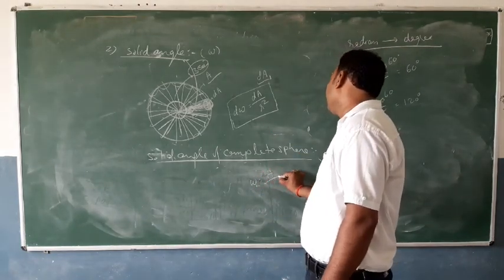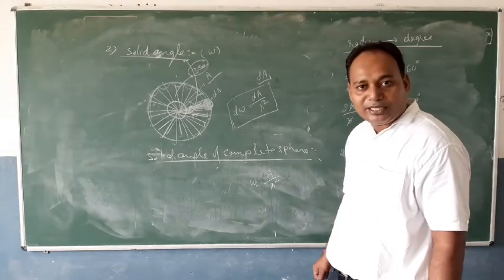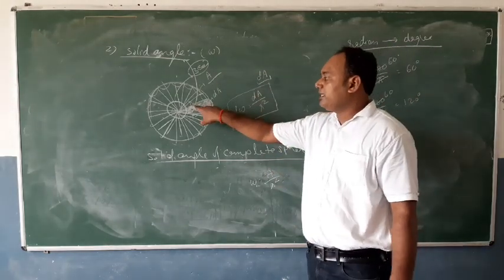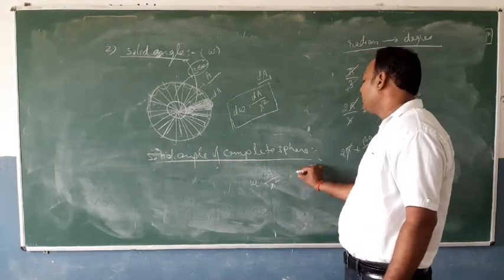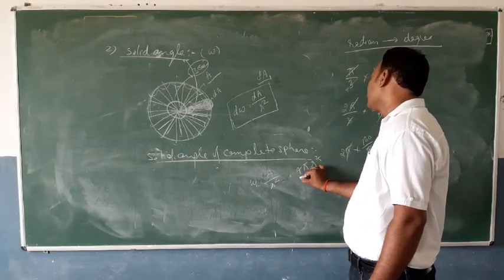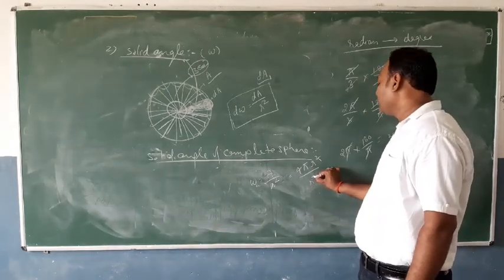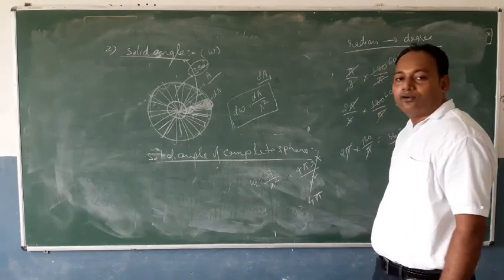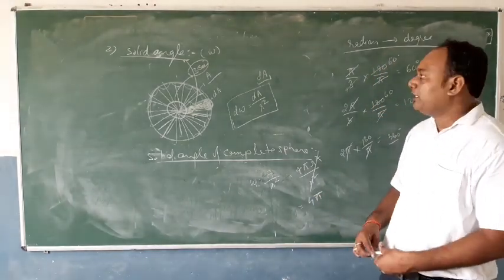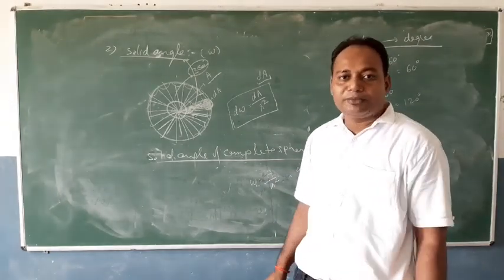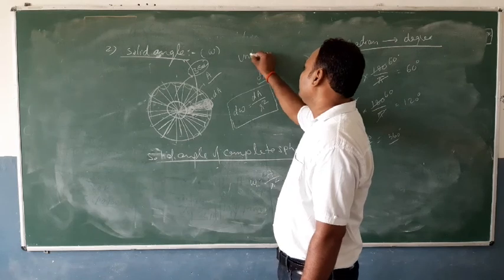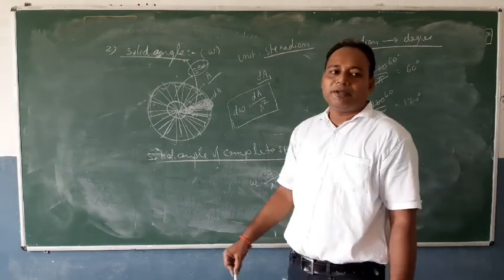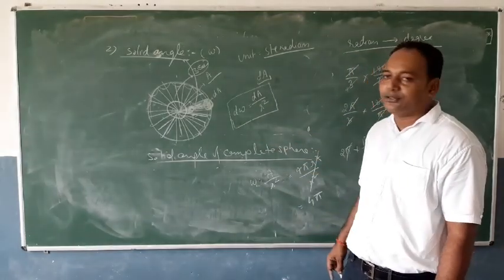The formula for solid angle is Ω = A / r². For a complete sphere, the surface area is 4πr², so the solid angle of a complete sphere is 4π. The important thing to note is the unit of solid angle: the unit of solid angle is the steradian. The unit of plane angle is the radian, and the unit of solid angle is the steradian.